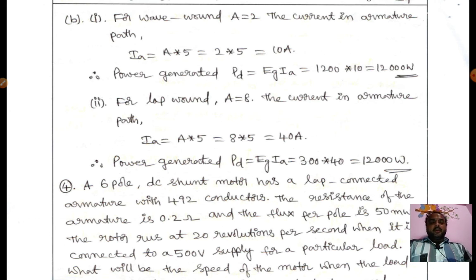For lap wound, A = 8. The current in armature path Ia = A × 5 = 8 × 5 = 40 amperes. Power generated Pg = Eg × Ia = 300 × 40 = 12,000 watts. In both cases, power will be the same.